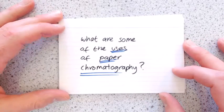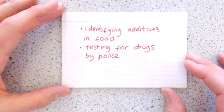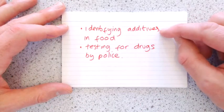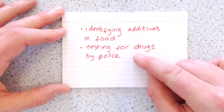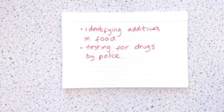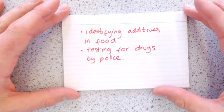What are some of the uses of paper chromatography? They can be used for identifying additives in food, and they can also be used for testing for drugs by police or airports. They can also be used for testing for drugs in athletes.